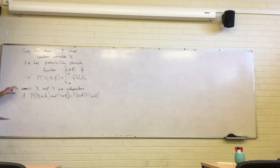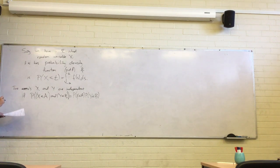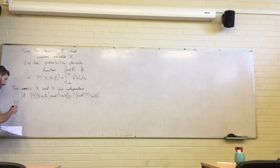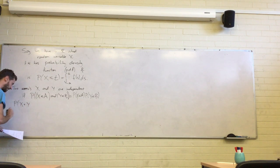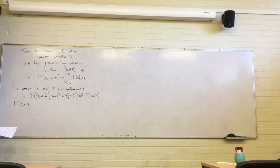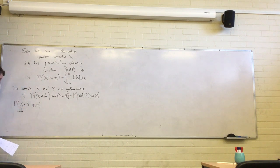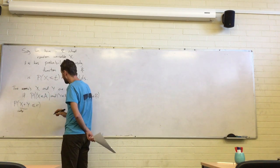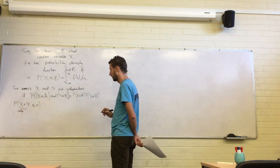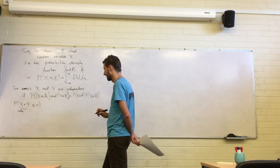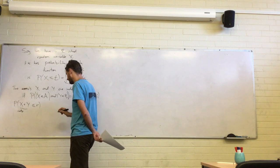So what we want to start with is thinking about how this looks in terms of PDFs. What we'd like to look at is the probability that the sum of two independent random variables is less than r. The way we're going to compute that is as follows.